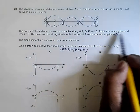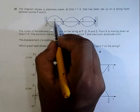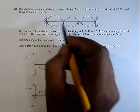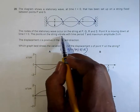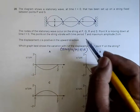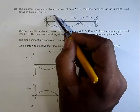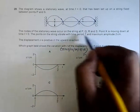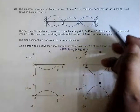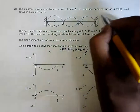Point x is moving down at time t equal to 0 — x is moving downward at this moment. The points on the string vibrate with time period T. If we consider a point, the time required for the point to travel from one extreme to the other and back is period T, and the maximum amplitude is 2 cm.